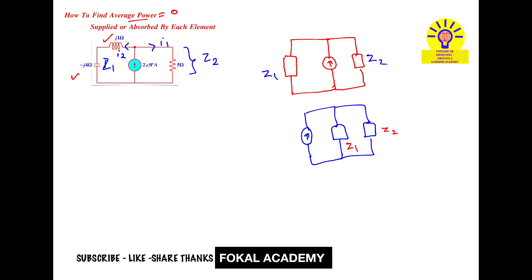So we need to find average power only in the source and resistance. Whatever the average power absorbed by the resistor, that is the average power supplied by the source. Now how to find current in the 5 ohm resistor? This is branch 2, so let's consider this is current I1.